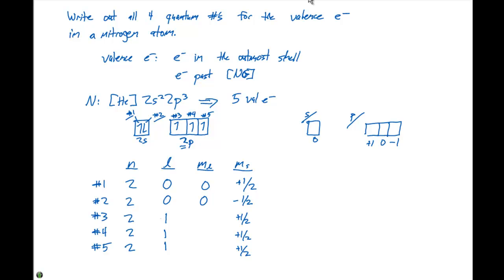The distinction is where in the p orbital these electrons are. The m sub l values range from +l to −l, and for a p orbital where l is 1, they range from +1 to −1. So the three m sub l values are +1, 0, and −1 — that's what distinguishes these three electrons, as they're located in a different block of the p orbital. If we could only have three quantum numbers, we wouldn't be able to distinguish all of the electrons; we need four identifiers to give each electron a unique set of four quantum numbers.